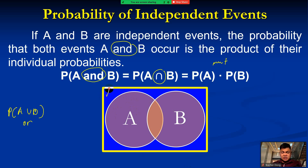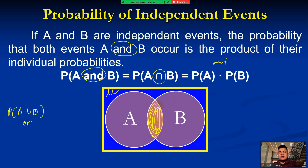Looking at the Venn diagram with the universal set, if events A and B have something in common in between, those are independent events. From the previous lesson, if two events have something in common we call them non-mutually exclusive events, and if they don't have something in common in the universal set, we call them mutually exclusive events.